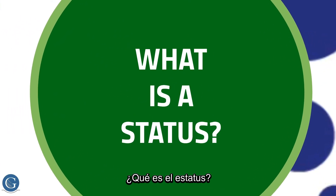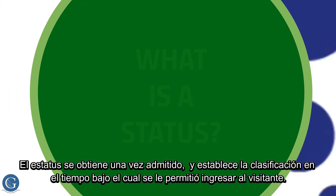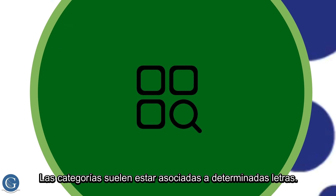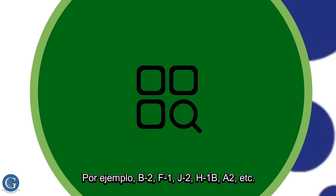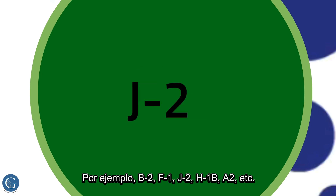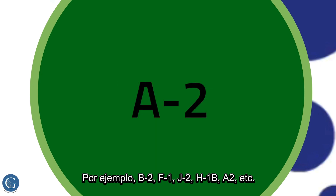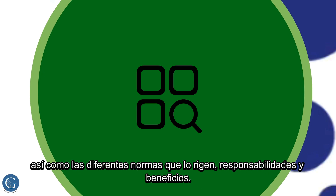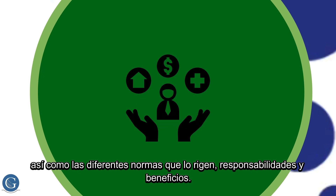What is Status? Status is obtained once you are admitted and states the classification and the amount of time under which the visitor was allowed to enter. The categories are often associated with certain letters — for example, B2, F1, J2, H1B, A2, etc. Each category has different circumstances under which it can be granted, as well as different governing regulations, responsibilities, and benefits.